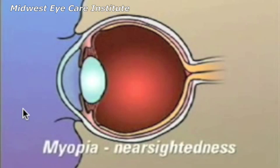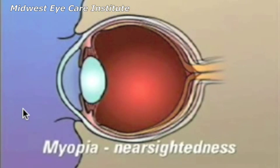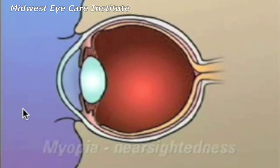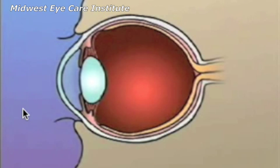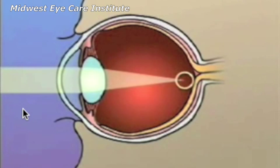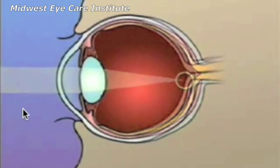Myopia or nearsightedness occurs when the shape of the eye is too long or the curve of the cornea is too severe. In this case, light rays are focused at a point in front of the retina instead of precisely on the retina itself.